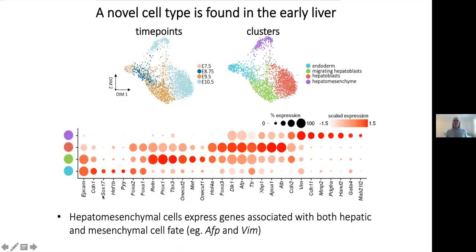We did the exact same strategies with our hepatoblast hepatic lineages. We see these early cells at E8.75 moving towards the hepatoblasts. If we cluster, we can see that there are more definitive endoderm-like cells, what we call migrating hepatoblasts, and then a hepatoblast cluster. This is shown with gene expression — we see PROX1, TBX3, OC1 in the migrating hepatoblasts, and then more mature hepatoblasts expressing higher levels of FOXA3, HNF4, alpha-fetoprotein, and albumin.